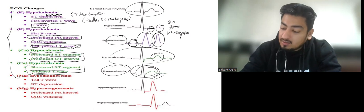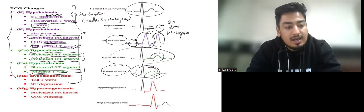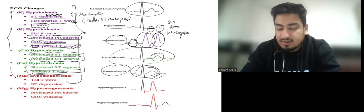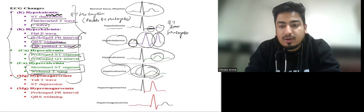In electrolyte abnormalities, these four are very important. Hypomagnesemia and hypermagnesemia are not that important but we will discuss them here. Hyponatremia and hypernatremia may cause ECG changes.